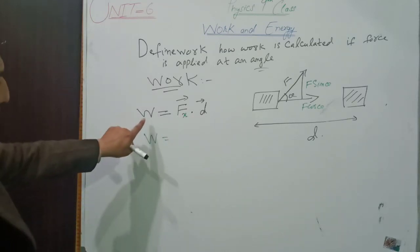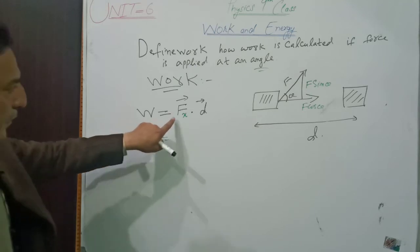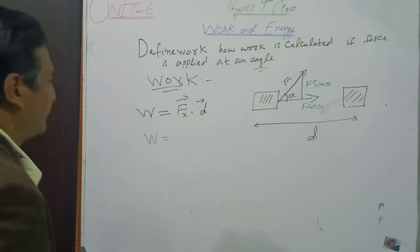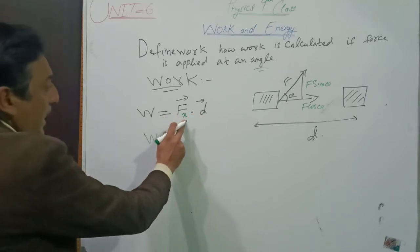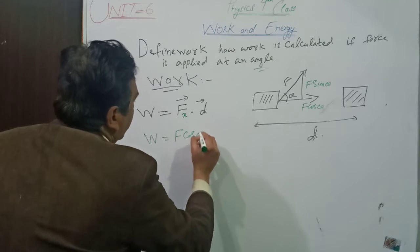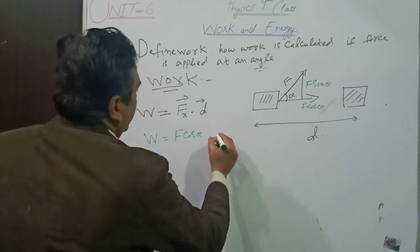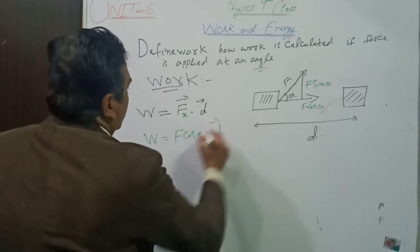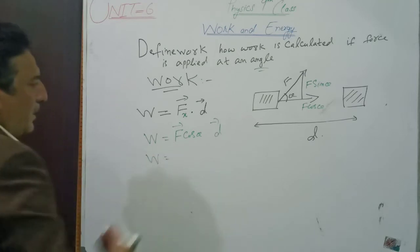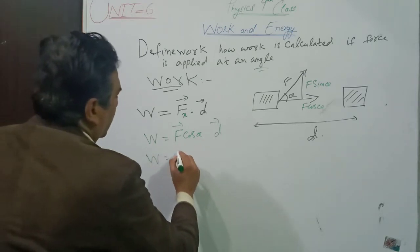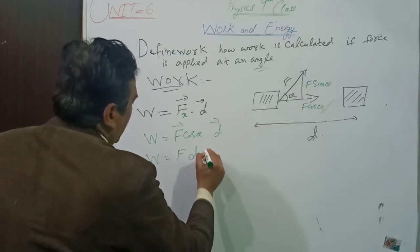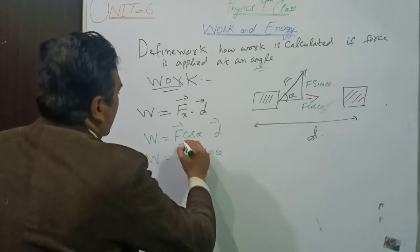Now work is the product of force in x direction and displacement. Force in x direction is F cos theta, and this is displacement. This can be written as F d cos theta.